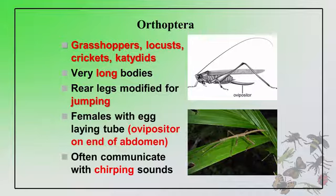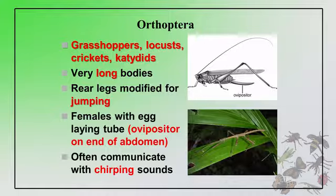Another important group of insects falls under the order Orthoptera: grasshoppers, locusts, crickets, and katydids. They have very long bodies, rear legs modified for jumping, and females have an egg-laying tube called an ovipositor on the end of the abdomen. They often communicate with chirping sounds.